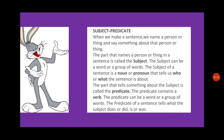Now children, every sentence has two parts. When we make a sentence, we name a person or thing and say something about that person or thing. The part that names a person or thing in a sentence is called a subject. For example, 'Ram is a good boy' — in this sentence, Ram is the name of a person, so the word Ram here is the subject. The subject can be a word or a group of words.